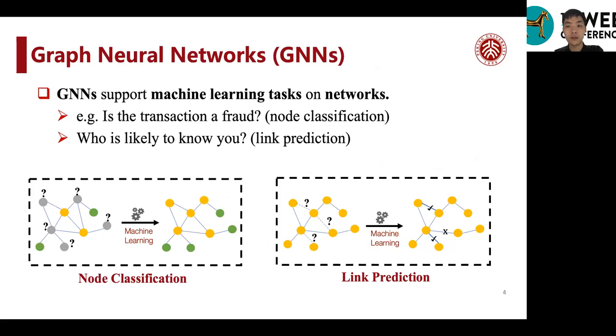When we talk about GNNs, basically GNNs support machine learning tasks on networks. There are many types of machine learning tasks on networks.